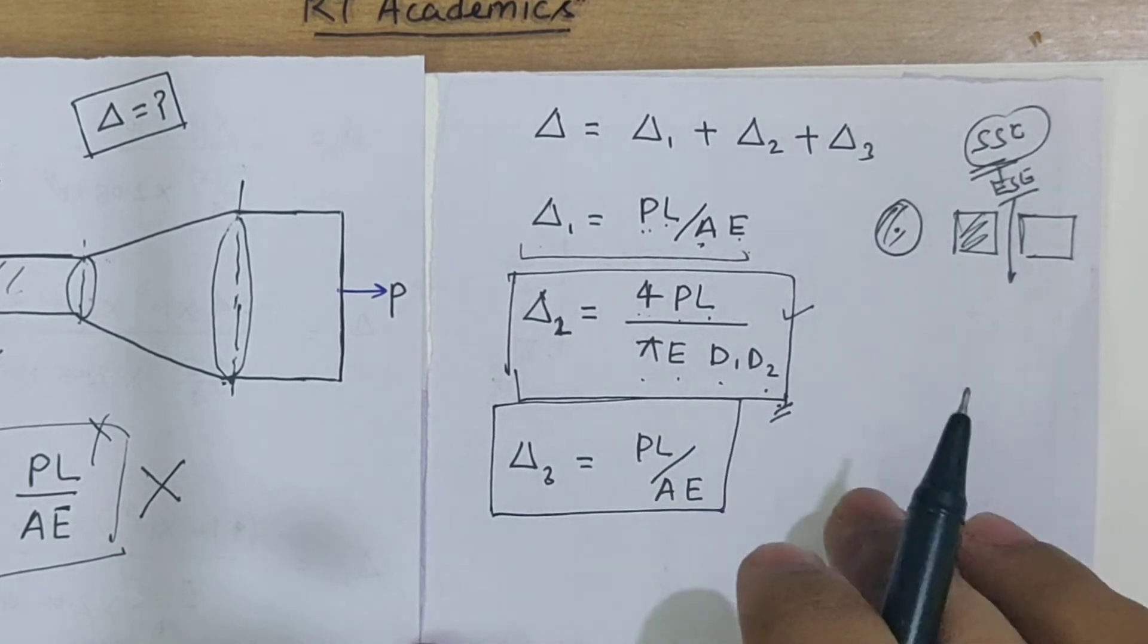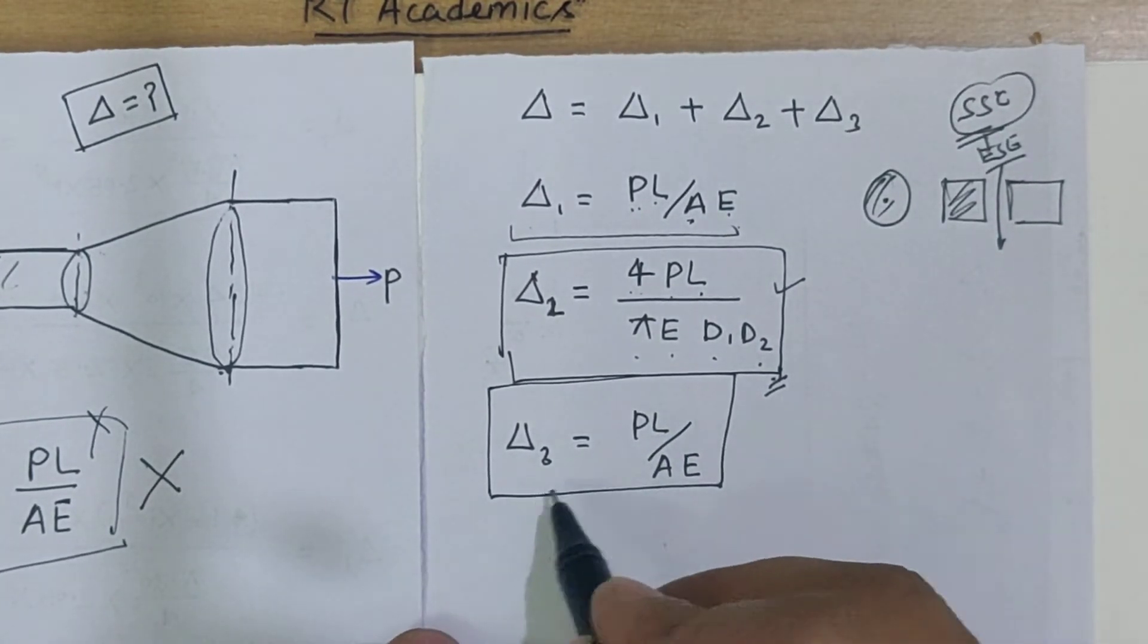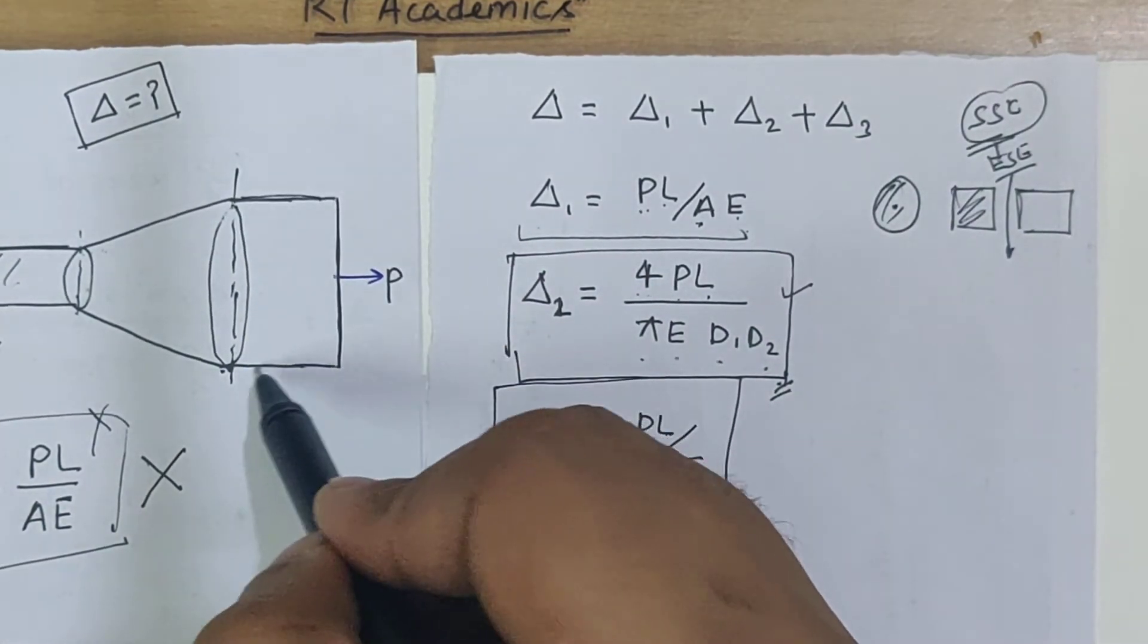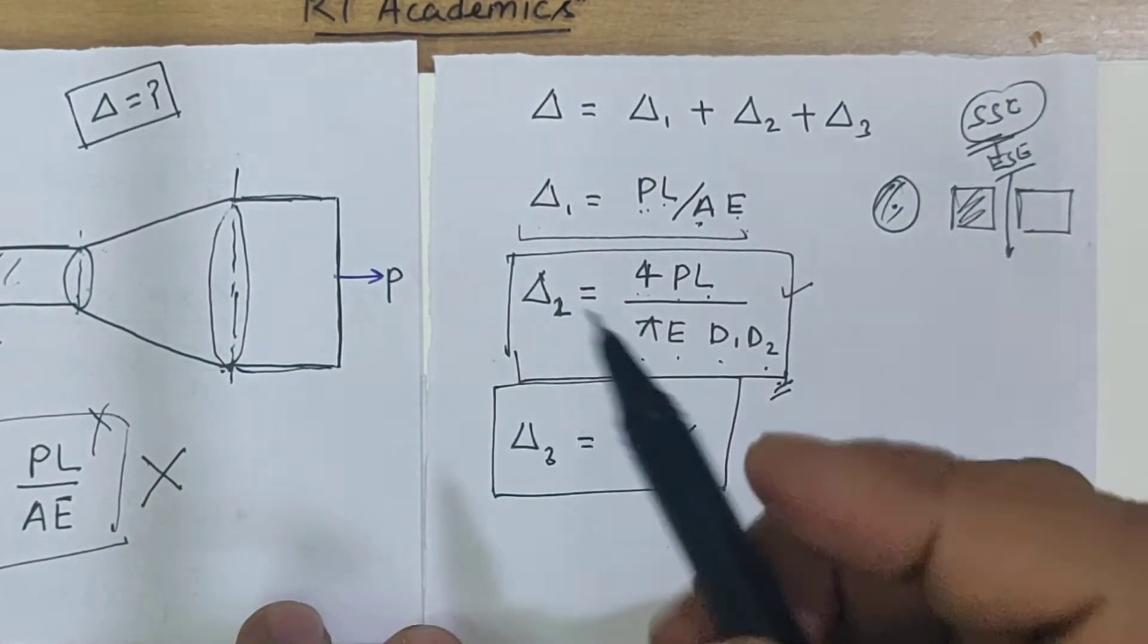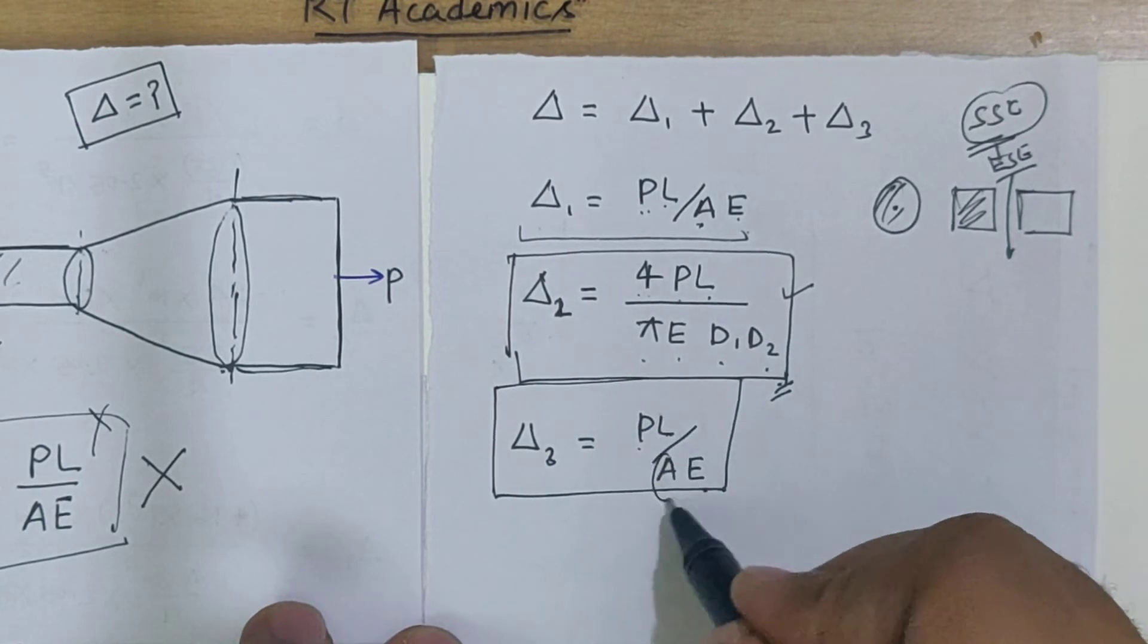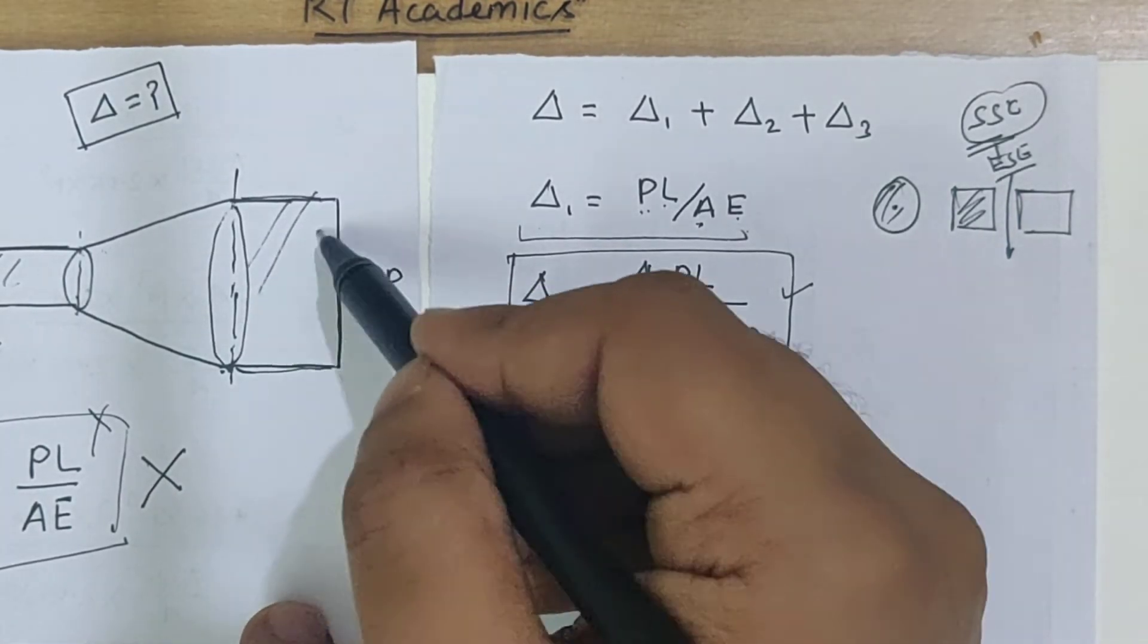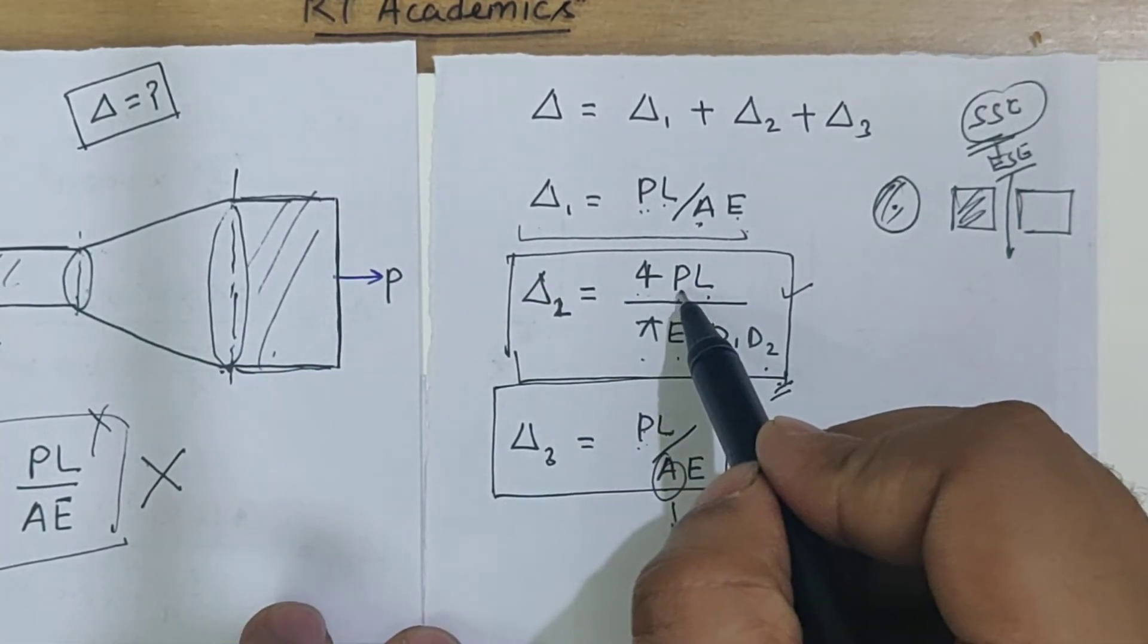Delta three, the deformation of the body, can be written as PL/AE. Again, this is uniform section with no taper, so you can take the cross-sectional area accordingly. PL/AE, where P is the force in the third member, whereas P is the force in the second member for deformation in the second segment. In such a way you can calculate the deformation.